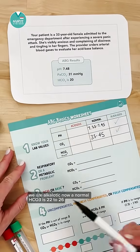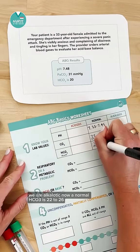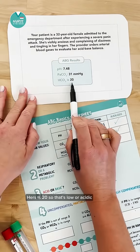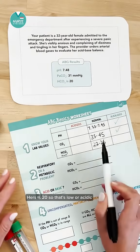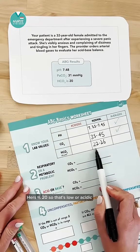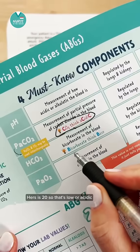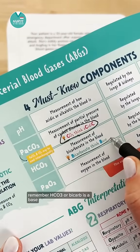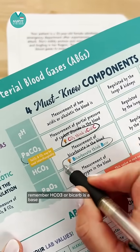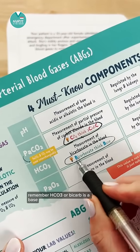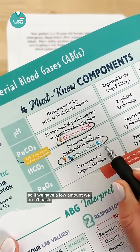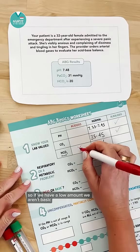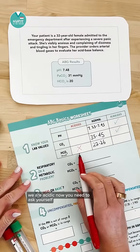A normal HCO3 is 22 to 26. Hers is 20, so that's low or acidic. Remember, HCO3 or bicarb is a base, so if we have a low amount we aren't basic — we are acidic.